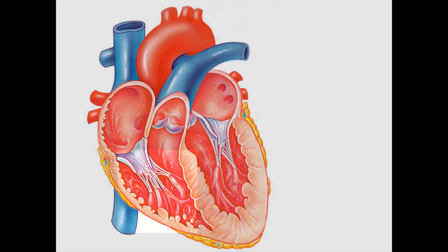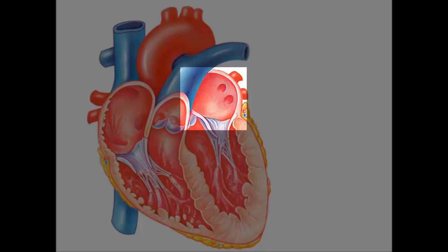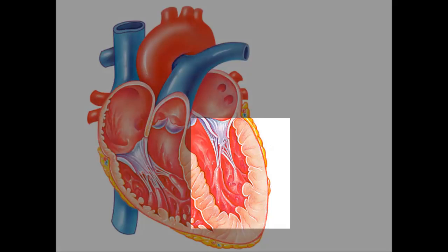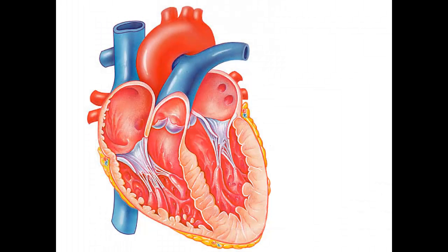The blood goes out to the lungs via the pulmonary trunk and right and left pulmonary arteries. The blood goes through the lungs and then returns to the heart via the pulmonary veins. The blood enters the left atrium, the collecting chamber for blood from the lungs. The blood then enters the left ventricle, which is the pump for the body or the systemic circulation. The blood goes out the aorta to the systemic circulation and is then collected into the inferior and superior vena cava, and the entire process repeats.